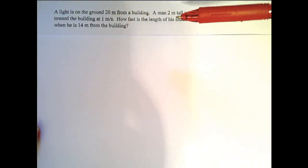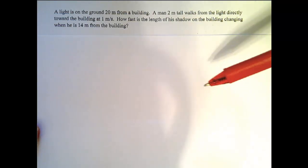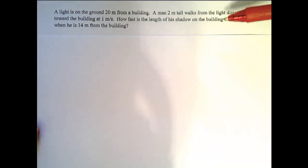This is a great related rates problem. A light is on the ground 20 meters from a building. A man 2 meters tall walks from the light directly toward the building at 1 meter per second. How fast is the length of his shadow on the building changing when he is 14 meters from the building?